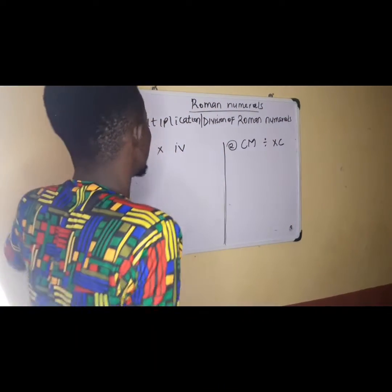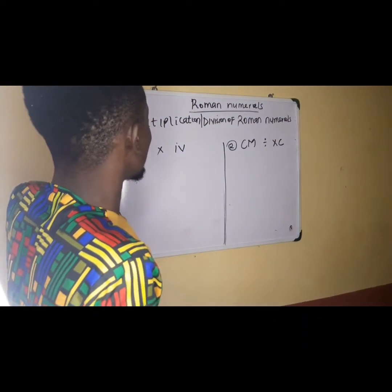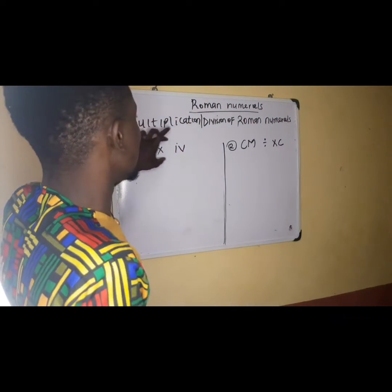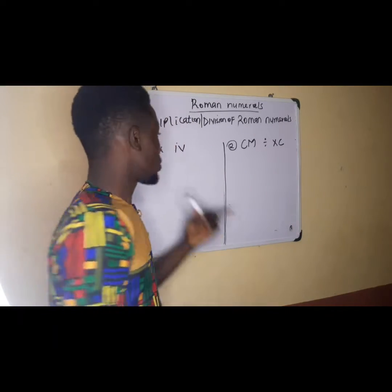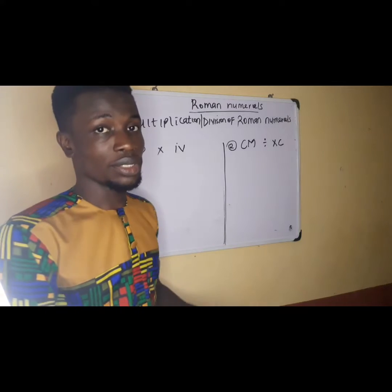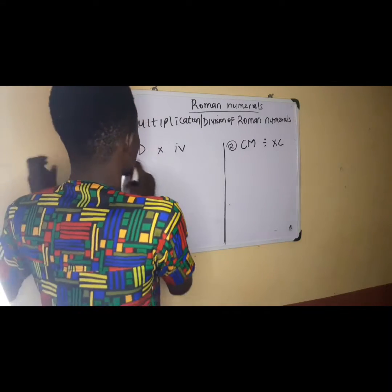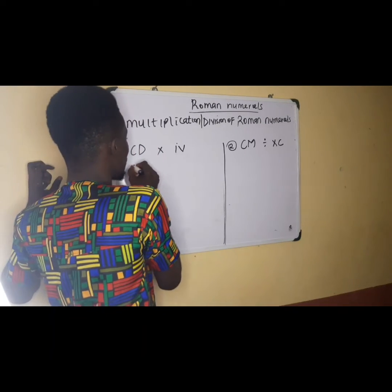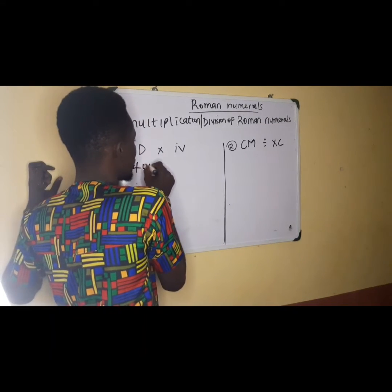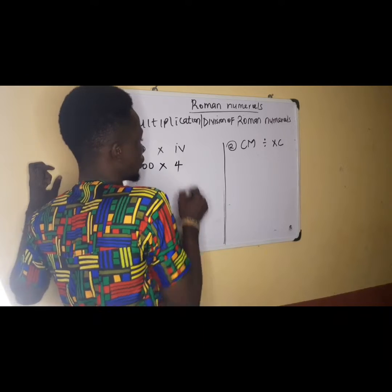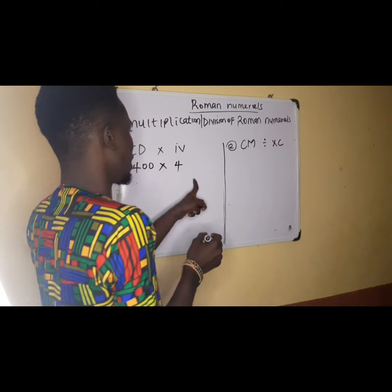Now let's go right away. We are asked to multiply CD by IV. The first thing to do is change your Roman figure to your normal figure. If you change CD, it is going to give us 400. Times IV means four, and if you multiply them together it is going to give you 1600.